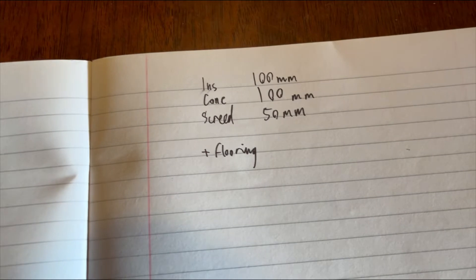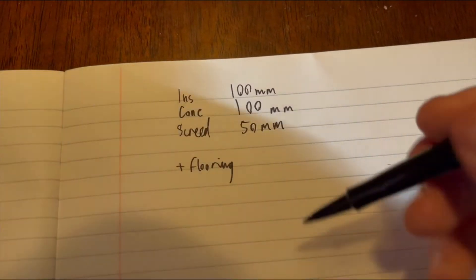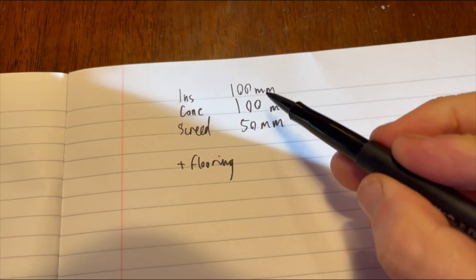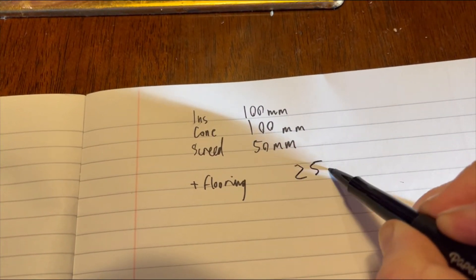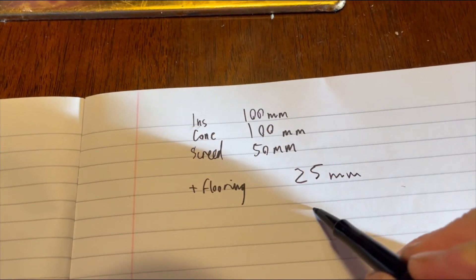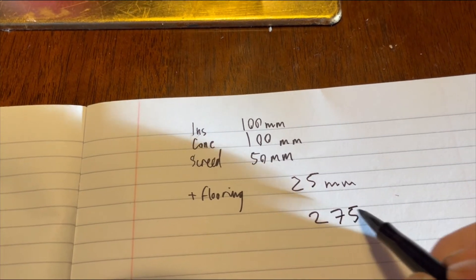So let's say you wanted to put a parquet floor down which is about 25 millimeters thick. That's going to mean 100 plus 100 plus 50 plus 25, and then you're at 275 millimeters.